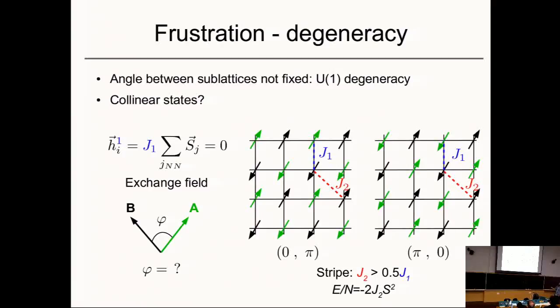People can say you have sublattice A, which is the green, and sublattice B with the black, so they can't have any angle between them — they're really decoupled. That's what frustration does to you: it introduces some degeneracies in your ground state.